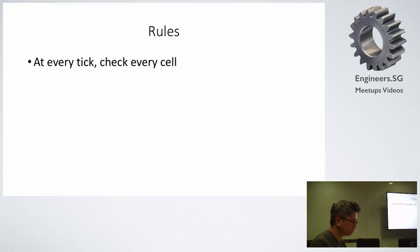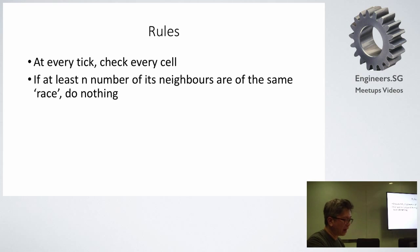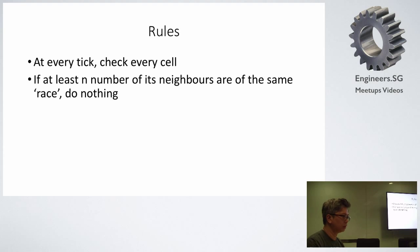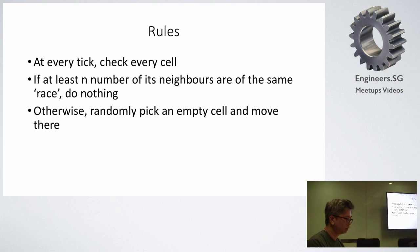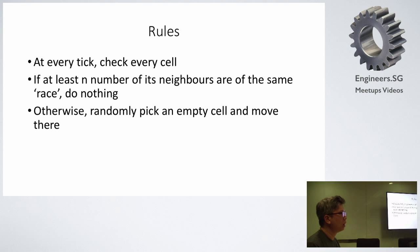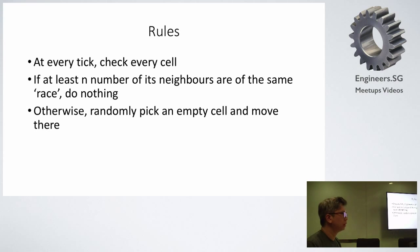The rules of the model: at every tick, check every cell. If at least N neighbors are the same race, do nothing. If not, randomly pick an empty cell and move there. So if I'm in a neighborhood and notice that at least two of my neighbors are my race — and N equals two — I'm happy and stay. If there's only one neighbor of the same race, I feel unhappy and move. That's the model, displayed on a grid.